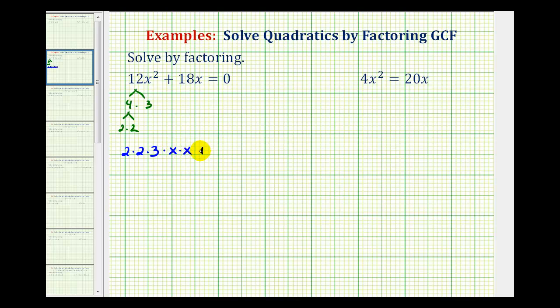Plus for the prime factorization of 18, we'd have 2 times 9, 2 is prime, and 9 is equal to 3 times 3. So for 18x, we'd have 2 times 3 times 3 times x.